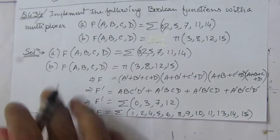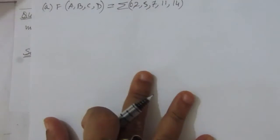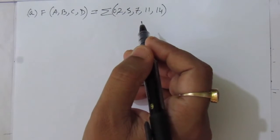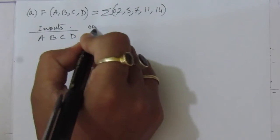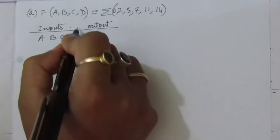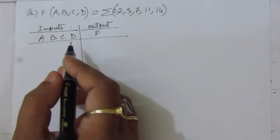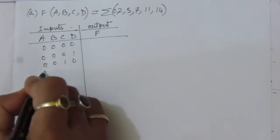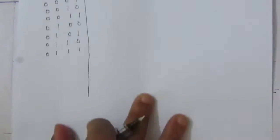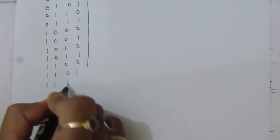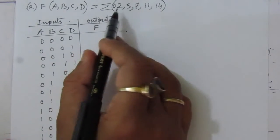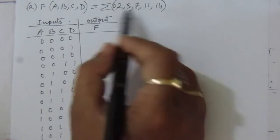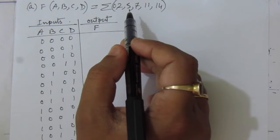Now we will go to the next step and solve part A. In part A we have the sum of minterms expression: sum of 0, 2, 5, 7, 11, and 14. We will first make the truth table for output F. Inputs are A, B, C, D, and for 4 variables we will have 16 combinations from 0 to 15. Let me write down the 16 input combinations quickly and find the output function.